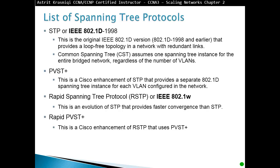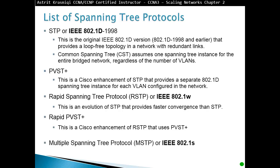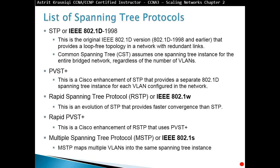Per-VLAN Spanning Tree, on the other hand, is Cisco's. It's good because with per-VLAN, we don't always have one link blocking. One link can be blocking for one VLAN while forwarding for another VLAN, so we're always utilizing all of our links. The disadvantage is that we have too many Spanning Trees running in our network.